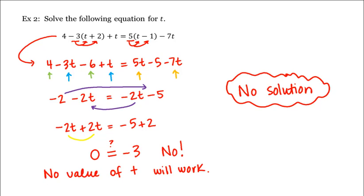Now what if this value over here, negative 3, had actually turned out to be 0? Then we'd have 0 is equal to 0, which is always true. So no matter what value of t you'd plug in, we'd always arrive at a true statement. Our answer in such a situation would be all real numbers.